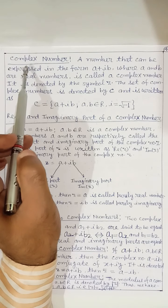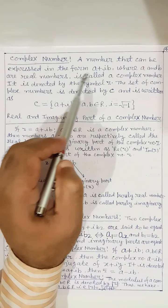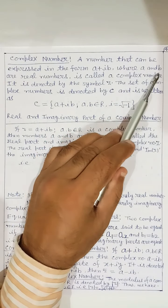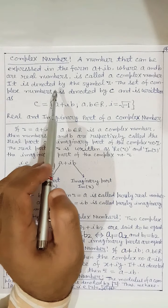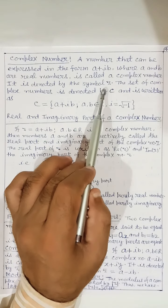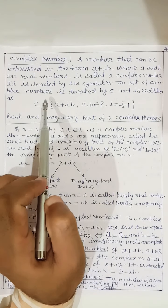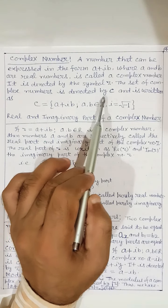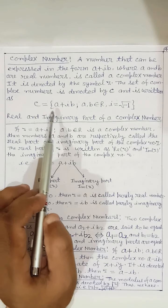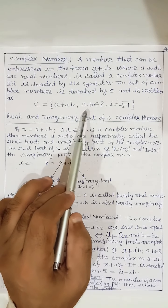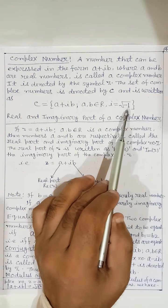Now we discuss complex numbers. A number that can be expressed in the form a + ib, where a and b are real numbers, is called a complex number, and it is denoted by the symbol z. The set of complex numbers is denoted by ℂ, written as ℂ = {a + ib : a, b ∈ ℝ, i = √(−1)}.